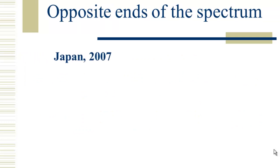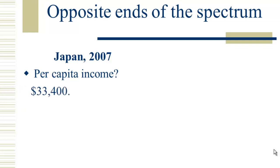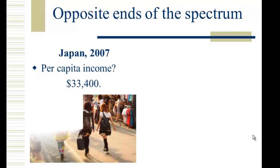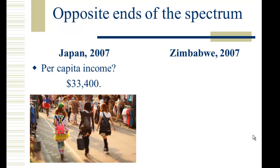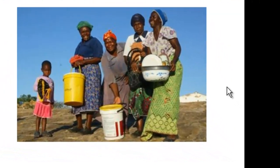We can see opposite ends of the spectrum in national statistics. Japan ranked 27th in the world in 2007 for per capita income, which came out to $33,400 American dollars per individual — very much an affluent and industrialized society. Zimbabwe was at the bottom in 2007 with a per capita income of $200 American dollars per individual. And this shows a set of older Zimbabwe women with a child, which as we'll see is really notable.